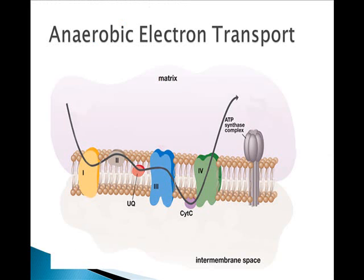Some bacteria can squeeze out a couple more ATPs using anaerobic electron transfer on their cell membrane itself, rather than a mitochondrial membrane. Some bacteria and ancient bacteria called archaeans use this in nutrient cycling for elements such as nitrogen and sulfur instead of starting with glucose — producing byproducts like hydrogen sulfide gas or swamp gas. Other anaerobes using this energy-releasing pathway live near hydrothermal vents.